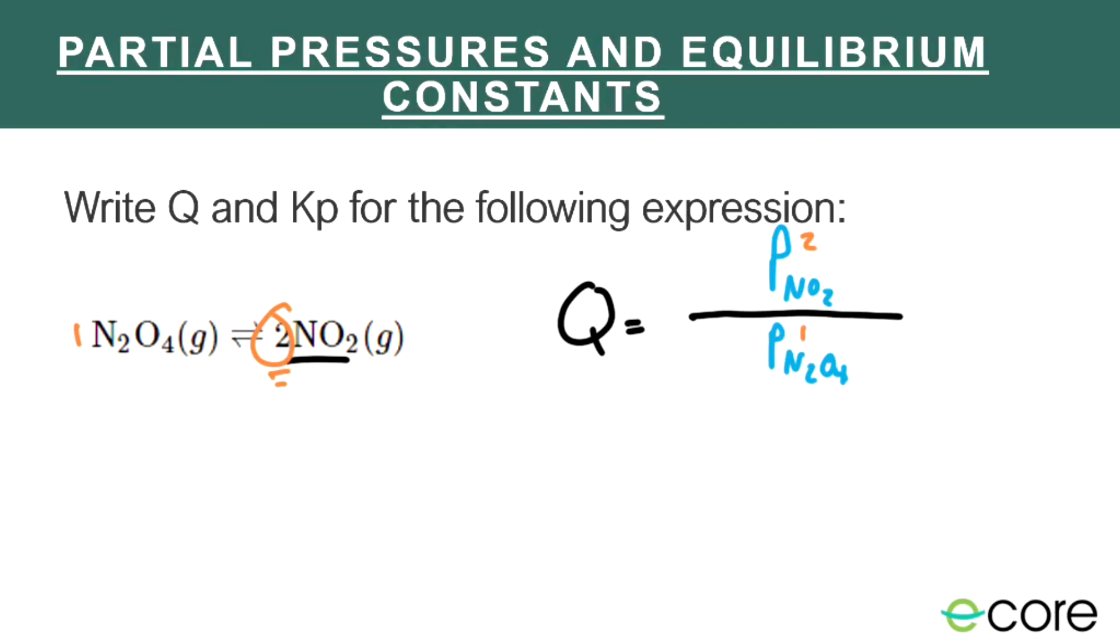Now, Kp looks exactly the same. I'm just going to put Kp equals products up top, PNO2 to the second, and PN2O4 to the first. Now, the only difference between these two is Q is always defined. So even when I start a reaction, I have a Q. K is only for the very specifically the end point of the reaction. It's like the finish line of our reaction, as we discussed in the last lesson. Okay, so that's how we write Q and Kp.